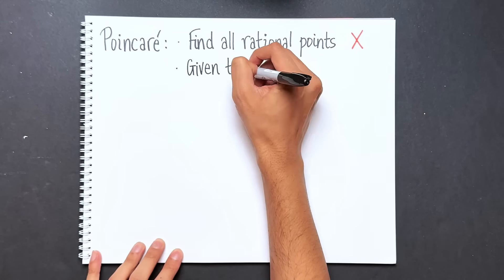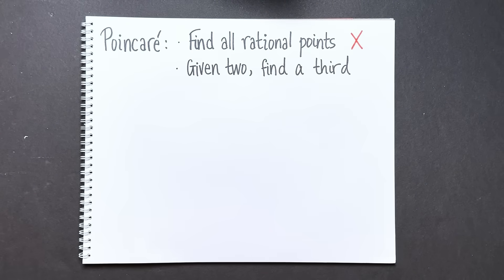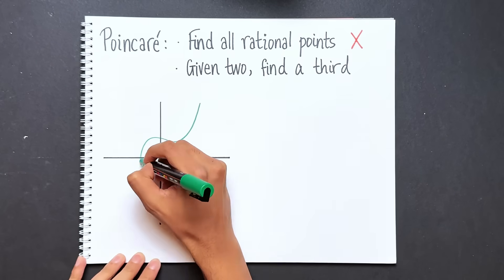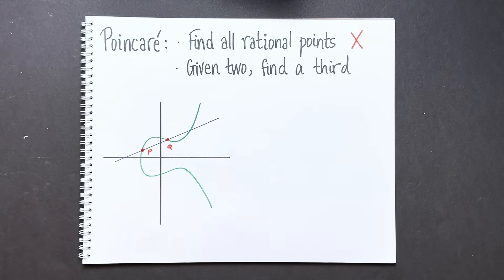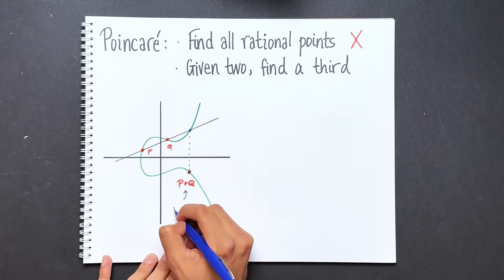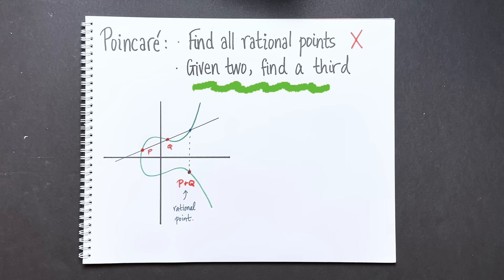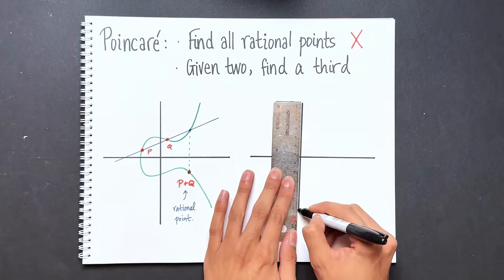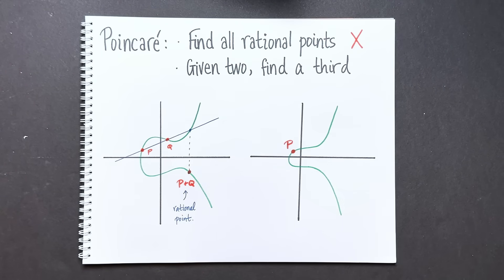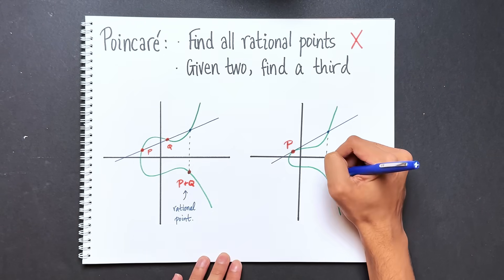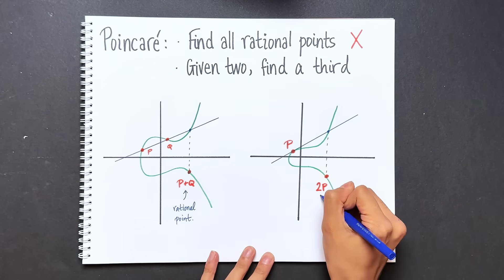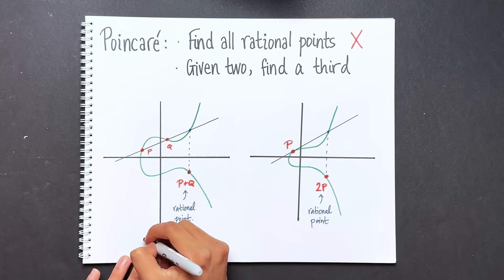We might be inclined to say this is a hopelessly difficult problem, but in the late 1800s Poincaré had a breakthrough. He realized you shouldn't try to find all the rational points - instead, given two rational points, generate a third. Here's how: take two known rational points on an elliptic curve, say P and Q, and draw a line connecting them. That line will typically intersect the curve at a third point. Reflect that third point across the x-axis and call this point P plus Q. This new point in red is also a rational point. But Poincaré went even further - you can add a point to itself by looking at the tangent line. This is called the chord and tangent process.